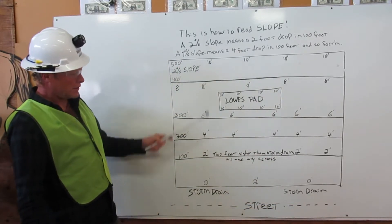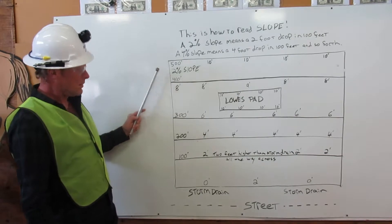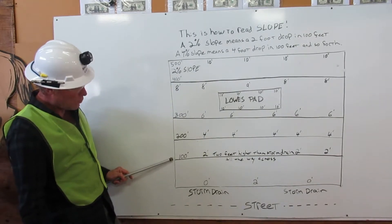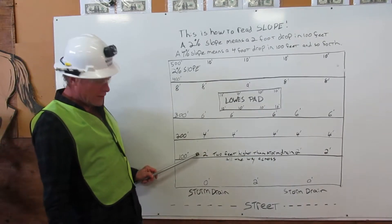This parking lot has a 2% slope. We come down to the storm drain and go back 100 feet, where the elevation increases two feet.